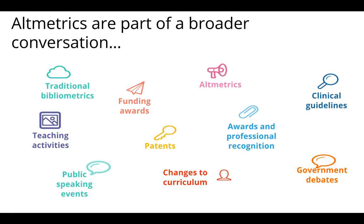Altmetrics are part of a broader conversation. They're there to aid traditional bibliometrics, such as funding awards, clinical guidelines, awards and professional recognition, government debates, curriculum changes, patents, and public speaking events — just something else that's going on in the bigger picture. To some extent the horse bolted a while ago in terms of capturing this data, but things are now happening to ensure we can make the most of new research. These are the sorts of things we should have been doing probably 10 or 15 years ago.